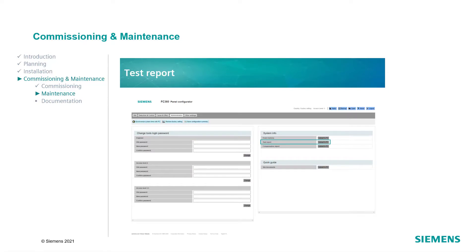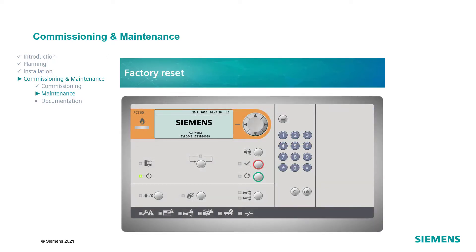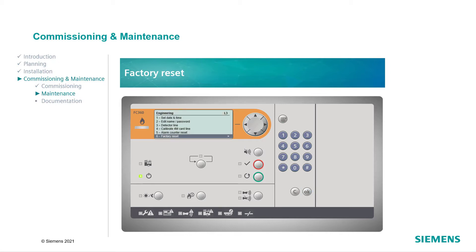The test report listing all tested devices can be downloaded in the Administration tab of the Panel Configurator. For the factory reset of the panel, open the menu on the FC360 panel and navigate to the Engineering option. Confirm with OK, then go to Factory Reset and confirm with OK. Press OK again to start the factory reset. All data will be deleted from the panel and the panel starts up again. When the restart has been completed, you can select if the auto-configuration should be done now or at a later time.